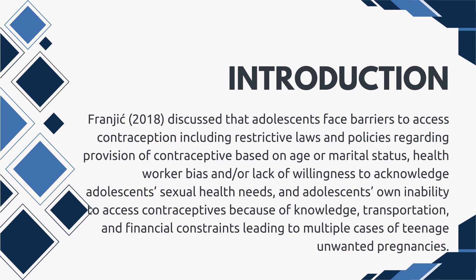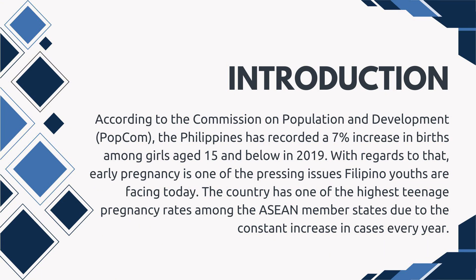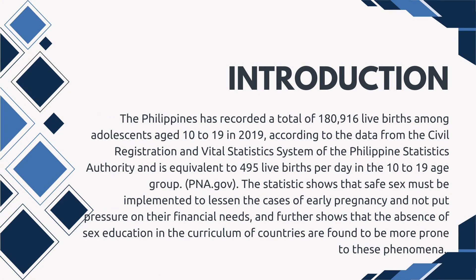According to the Commission on Population and Development (POPCOM), the Philippines recorded a seven percent increase in births among girls aged 15 and below in 2019. Early pregnancy is one of the pressing issues Filipino youth are facing today. The country has one of the highest teenage pregnancy rates among ASEAN member states. The Philippines recorded a total of 180,916 live births among adolescents aged 10 to 19 in 2019, according to data from the Civil Registration and Vital Statistics System of the Philippine Statistics Authority, equivalent to 495 live births per day in the 10 to 19 age group.